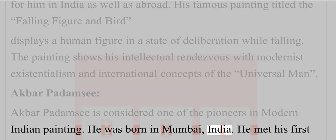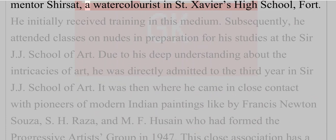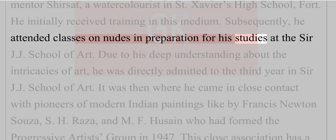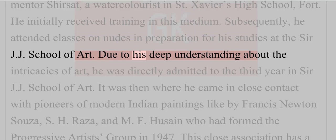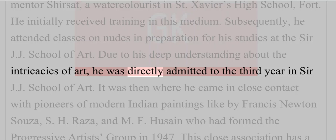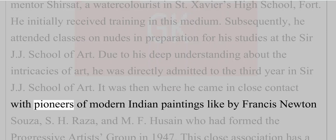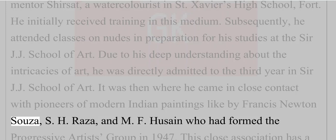Akbar Padamsee is considered one of the pioneers in modern Indian painting. He was born in Mumbai, India. He met his first mentor Shirsath, a watercolorist, in St. Xavier's High School, Fort, and initially received training in this medium. Subsequently, he attended classes on nudes in preparation for his studies at Sir J.J. School of Art. Due to his deep understanding of the intricacies of art, he was directly admitted to the third year at Sir J.J. School of Art. It was there where he came into close contact with pioneers of modern Indian paintings like Francis Newton Souza, S.H. Raza, and M.F. Hussain, who had formed the Progressive Artists Group in 1947.